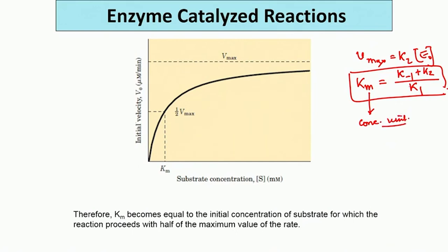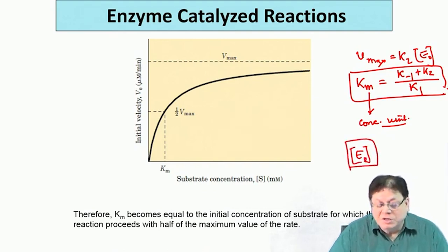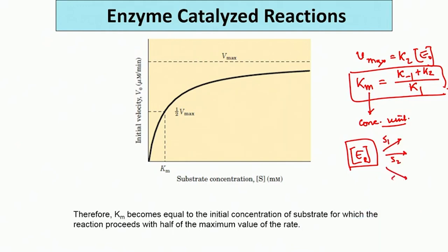If you plot the initial velocity by taking various substrate concentrations while keeping the enzyme concentration constant — say you add different substrate concentrations S1, S2, S3 — and determine the initial velocity for each reaction, these initial velocities will be different for different values of S. As you slowly increase the substrate concentration and determine the initial velocity, you then plot initial velocity against substrate concentration.